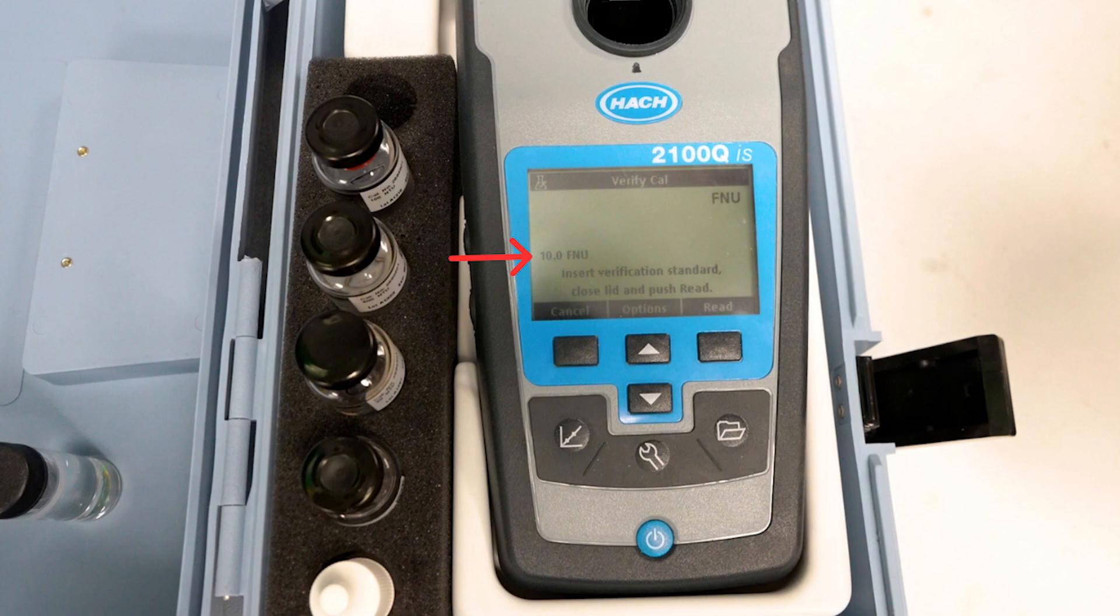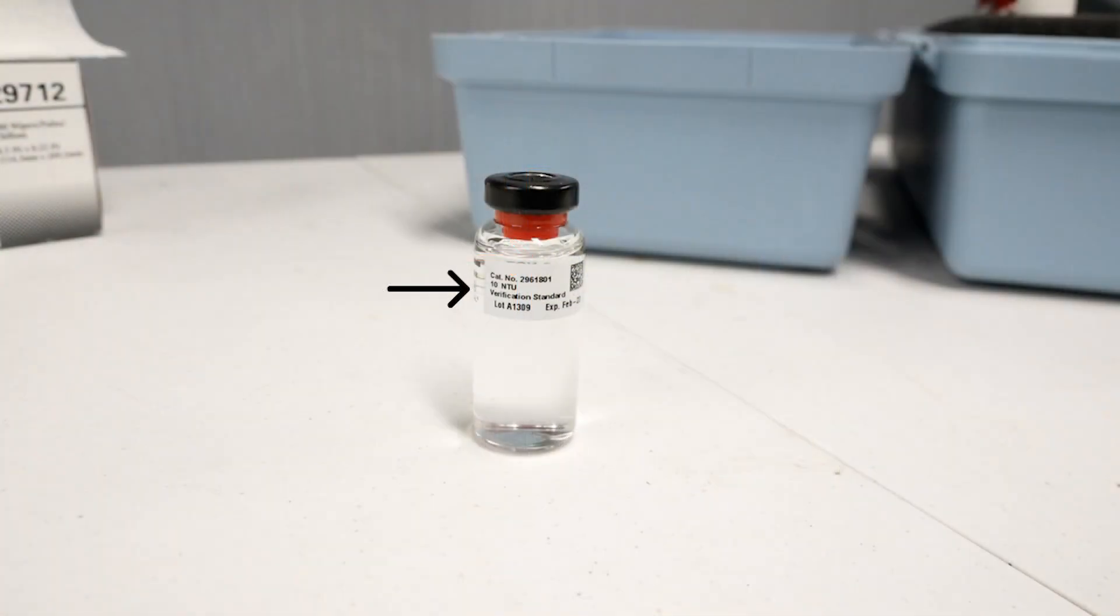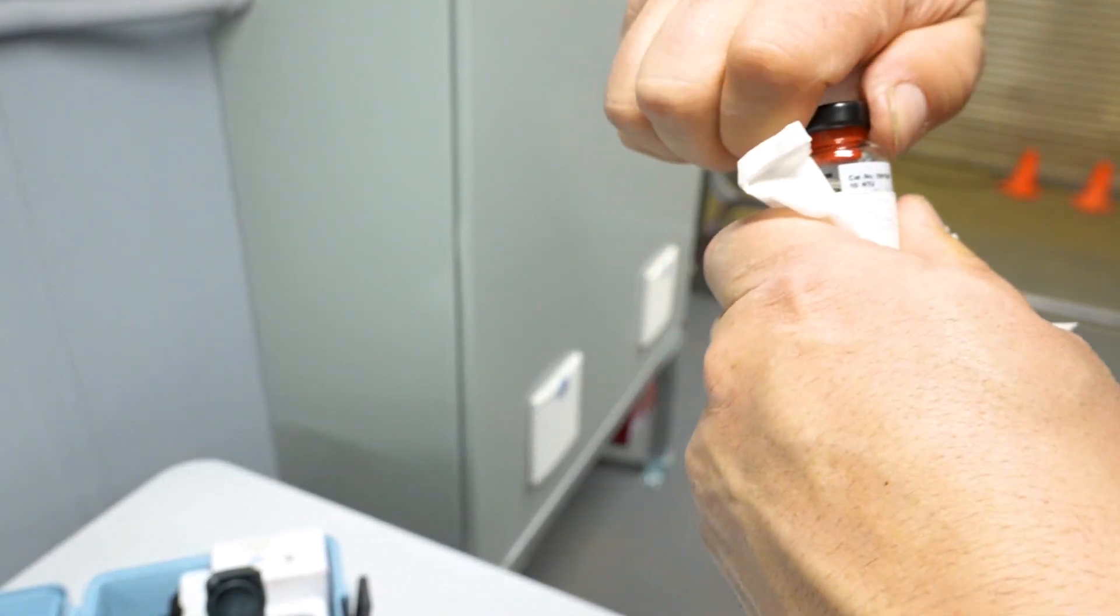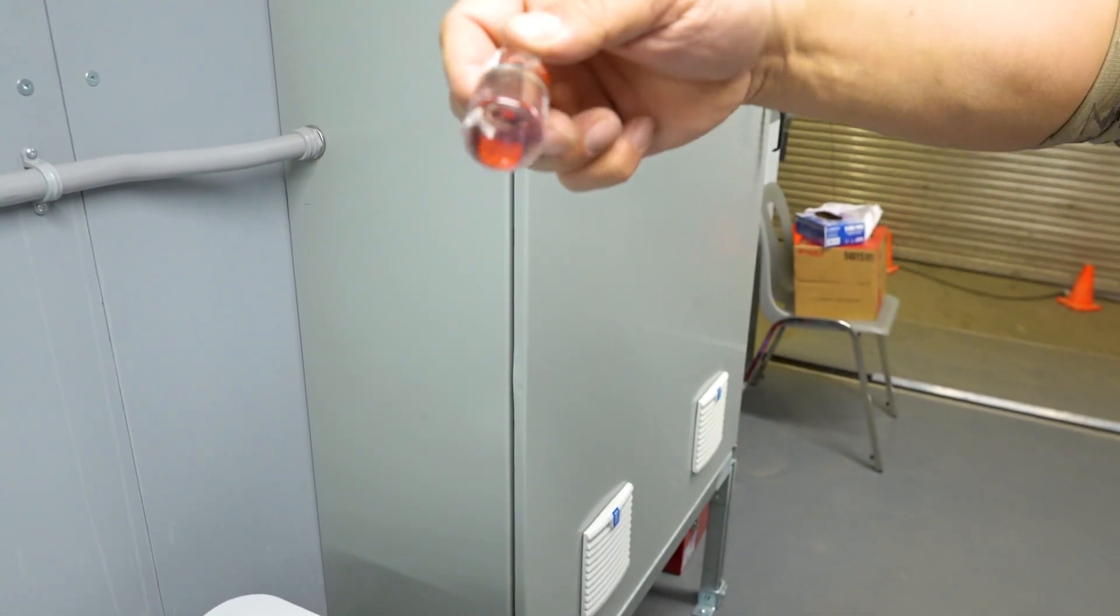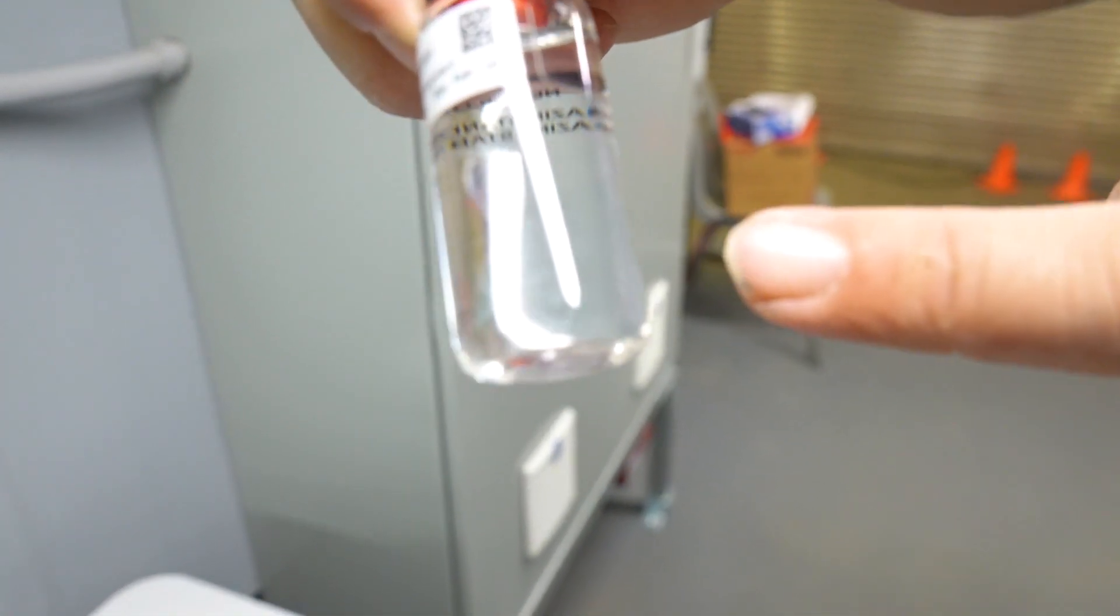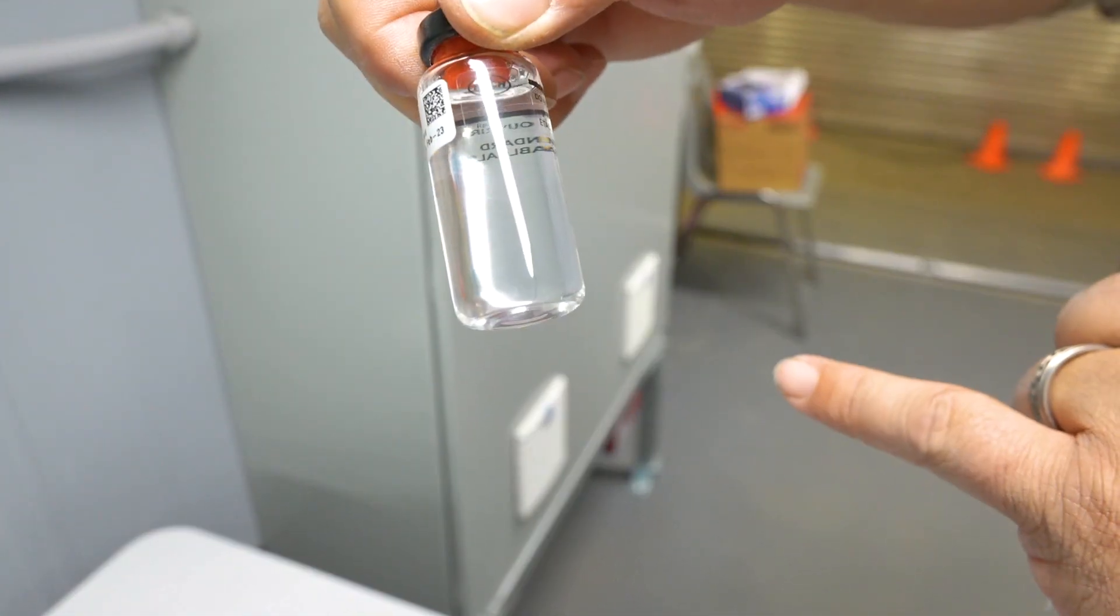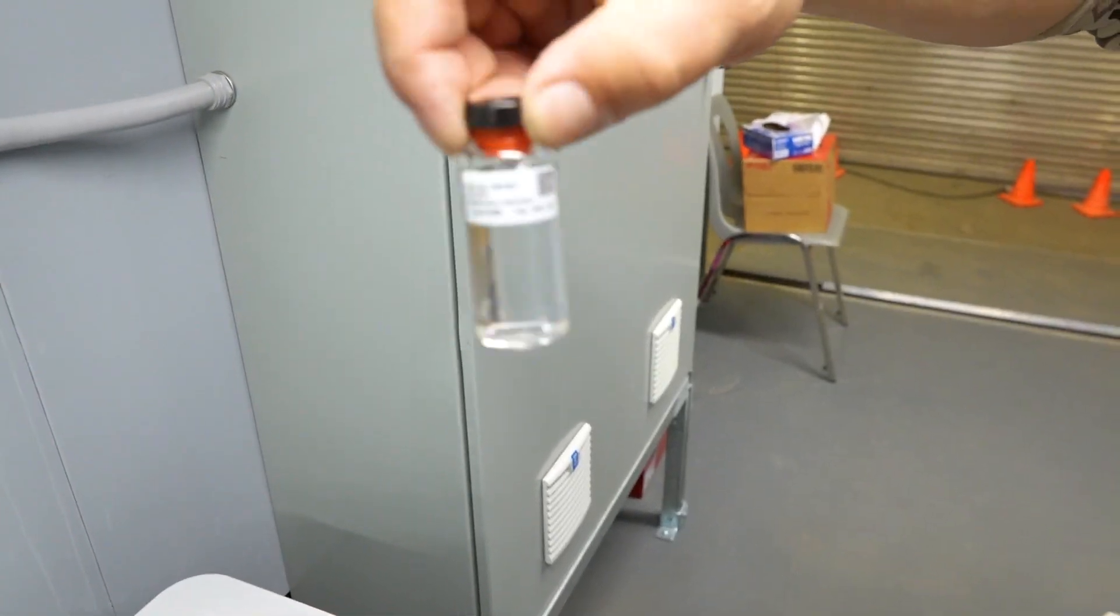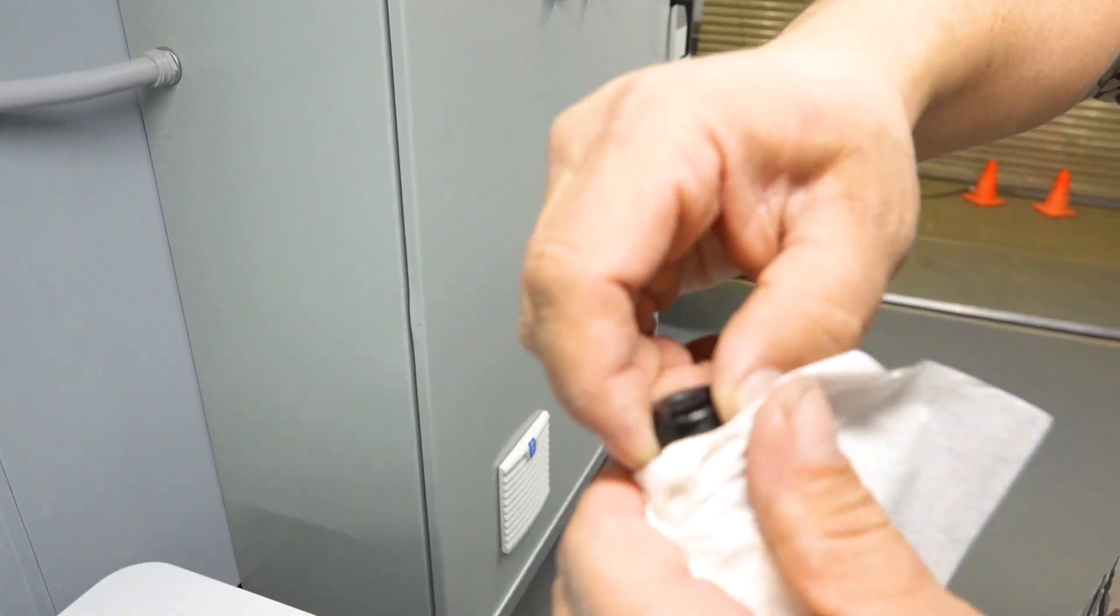So here we start with our 10 NTU, and each bottle will be labeled 10, and the same thing we've got to make sure this is clean, so we wipe it off, especially for reading turbidity because a fingerprint can give you a higher reading than what you actually have. Once it's clear we also give it a swirl because each of these units, if you see the white powder in there, is suspended, and you've got to swirl them around to make sure it's mixed up properly. You don't want to shake it because you'll introduce bubbles into the solution, and we don't want that because it'll change your readings as well.